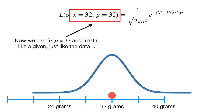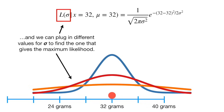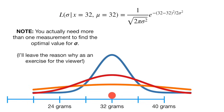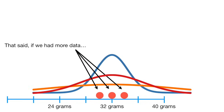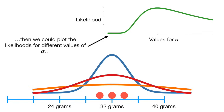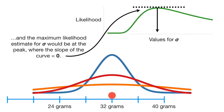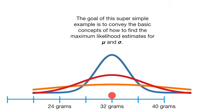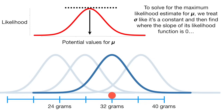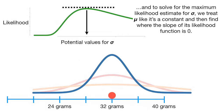Now we can fix mu equals 32 and treat it like a given — just like the data — and plug in different values for sigma to find the one that gives the maximum likelihood. Note: you actually need more than one measurement to find the optimal value for sigma. If we had more data, we could plot the likelihoods for different values of sigma, and the maximum likelihood estimate for sigma would be at the peak where the slope of the curve equals zero. To solve for the MLE for mu, we treat sigma as a constant and find where the slope of its likelihood function is zero; for sigma, we treat mu as a constant and find where its slope is zero.